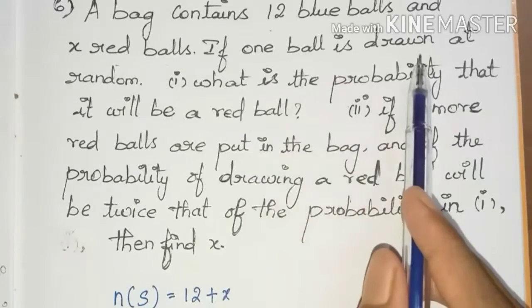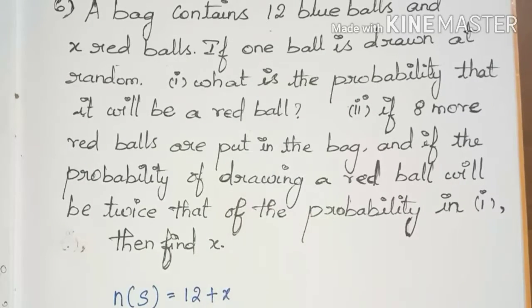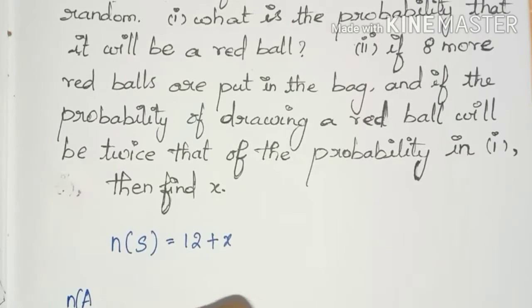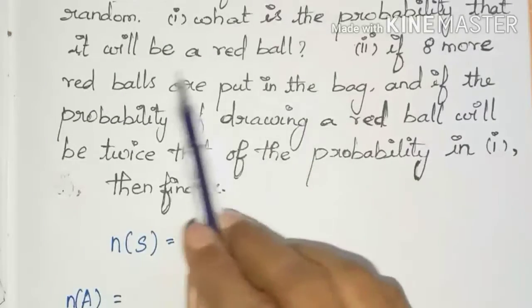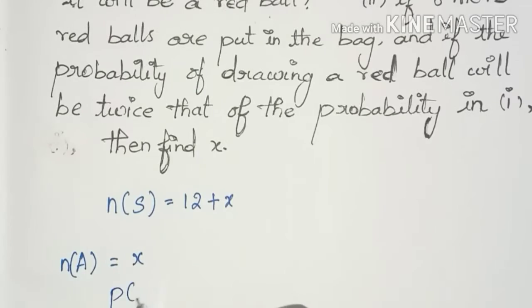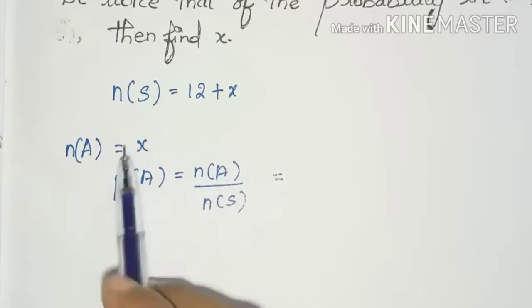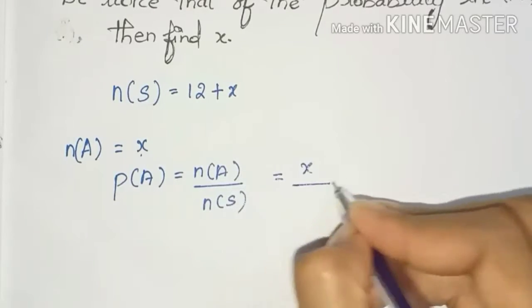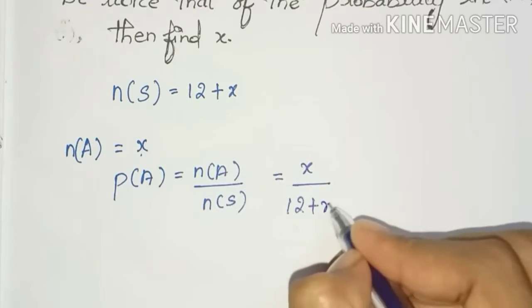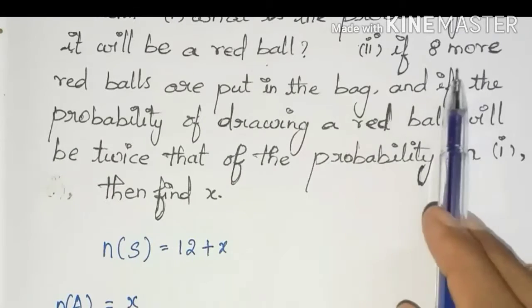First question: a ball is drawn at random, find the probability that it will be a red ball. The number of red balls is x. So P(A) = n(A) divided by n(S), which gives x divided by 12 plus x. This is equation 1.